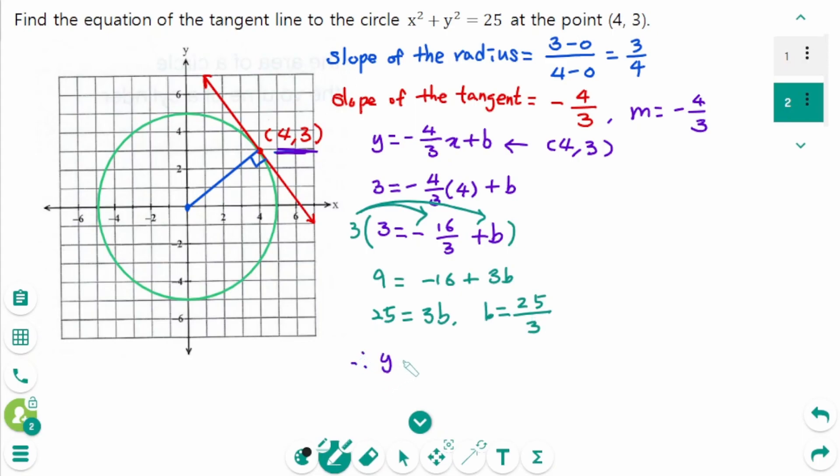So y equals minus 4 over 3x plus b, which is 25 over 3.